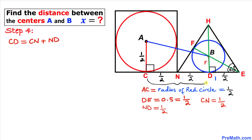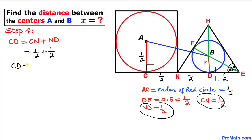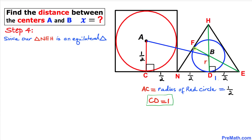Now the distance CD is simply CN plus ND. We know CN is 1/2 and ND is 1/2, so CD equals 1/2 plus 1/2, which gives us 1.